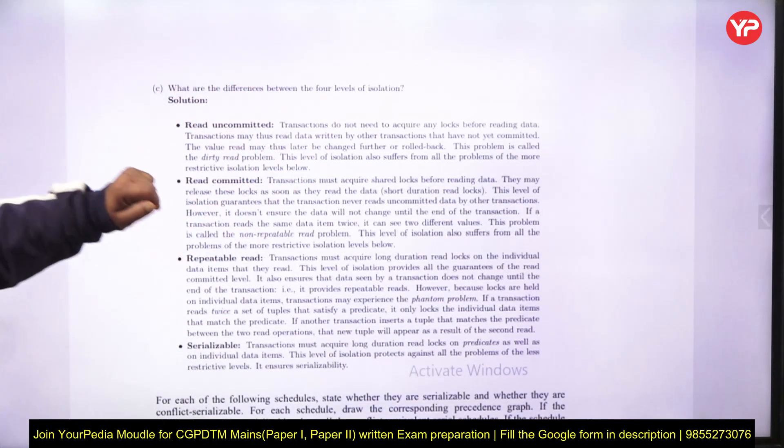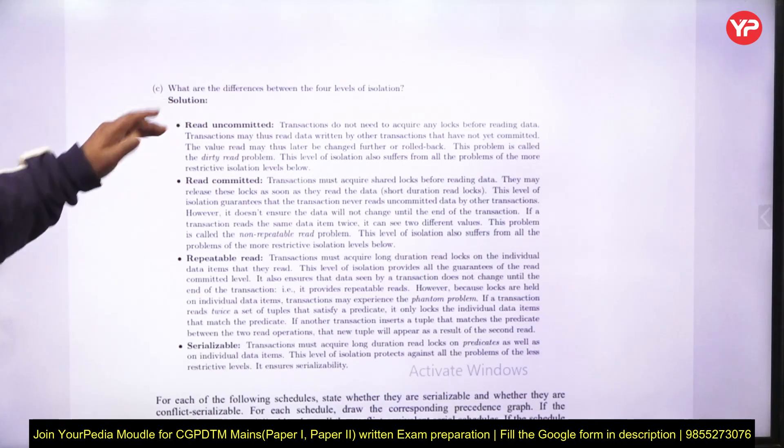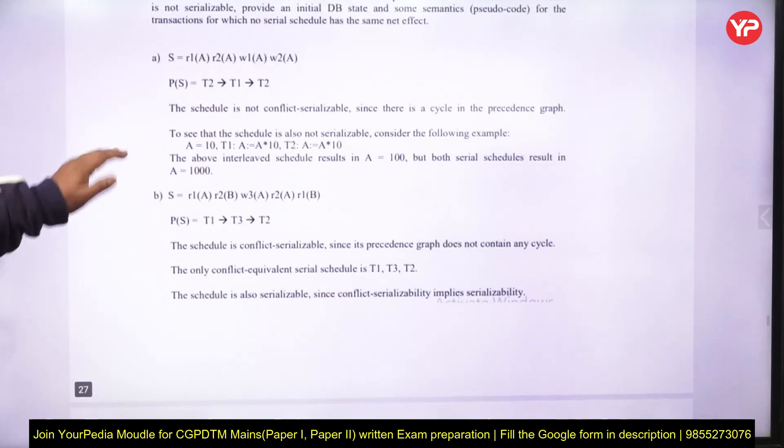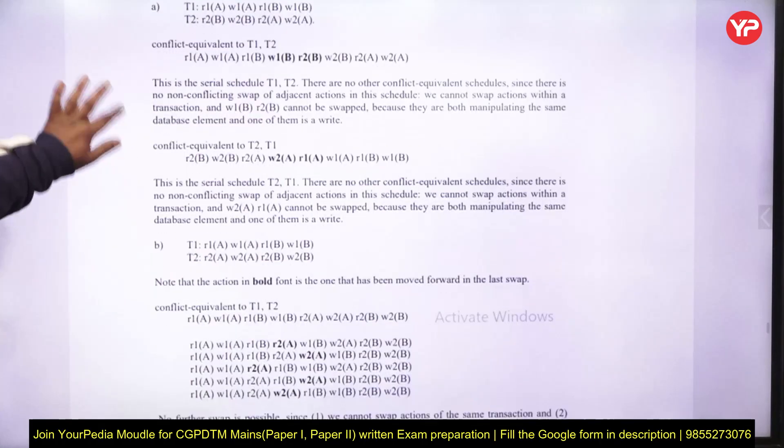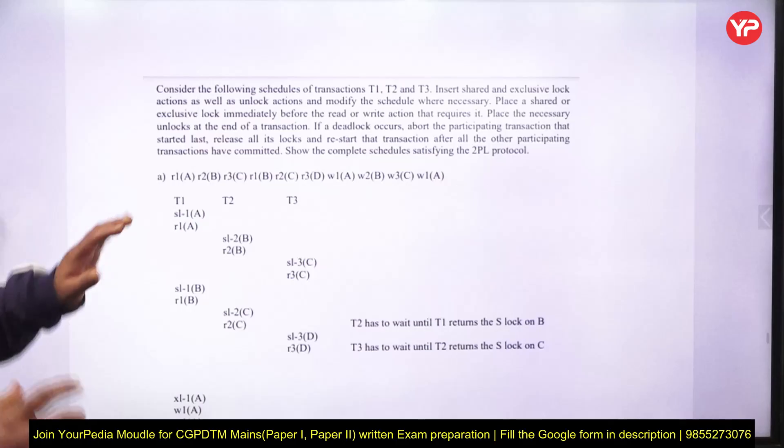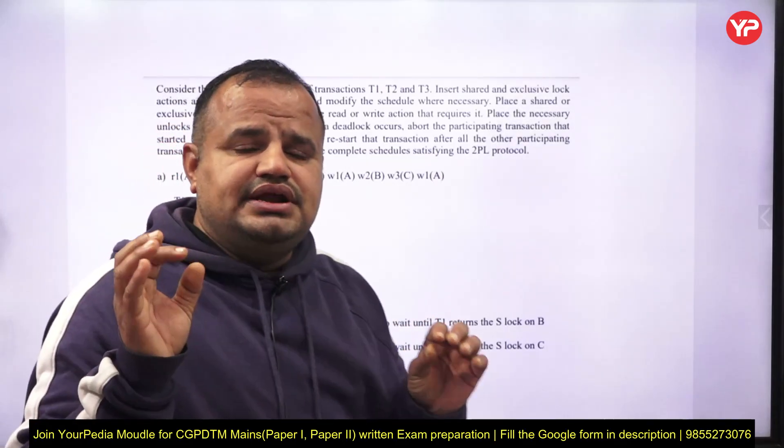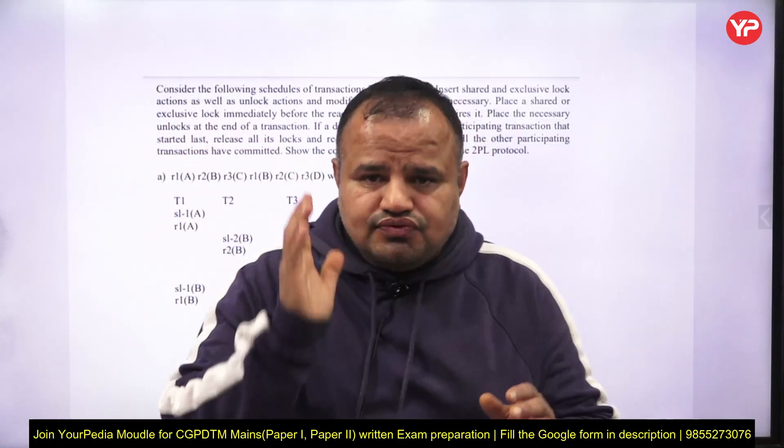we have to find the given schedule is executed by 2PL or not? The same answer. Next, what is the difference between four level of isolation? That is read uncommitted, read committed, repeatable read. Now, again, we have to find out conflict serializable or not? Again, question with their solutions.